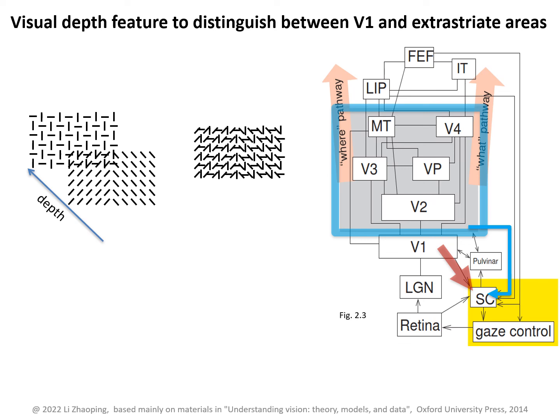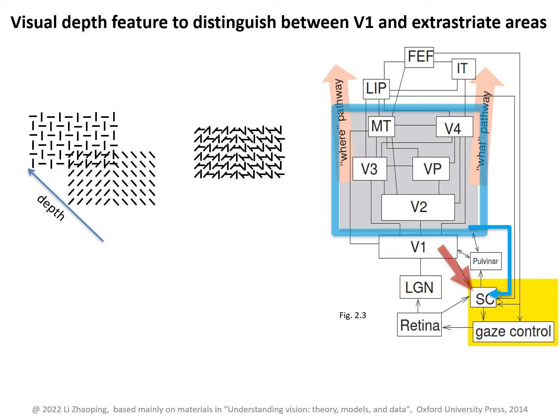Therefore, these 3D depth and 2D image processing data suggest that if V1 saliency mechanisms can work sufficiently quickly to guide attention, then cortical areas beyond V1 may not contribute to attentional guidance by external visual inputs.